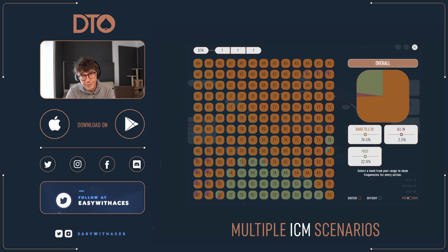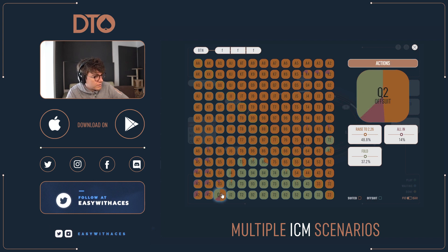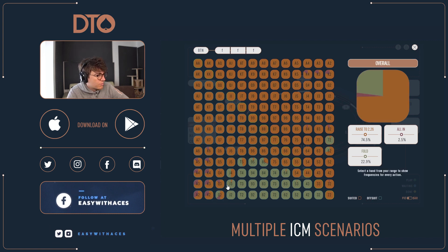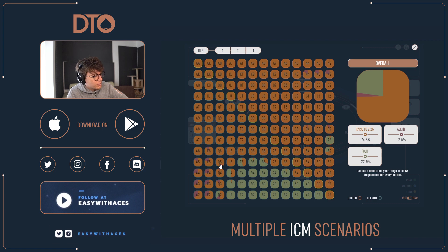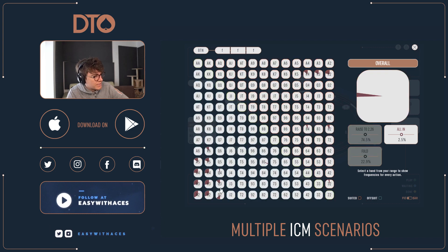In general, you're just not going to see many situations where you want to open this wide in chip-EV. We're opening queen-two offsuit — that's not going to happen in chip-EV against almost anyone in the blinds. We're opening jack-four offsuit, all these offsuit combos, suited deuces, every pair. We have an incredibly wide range, and we even have some all-ins.